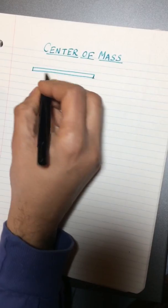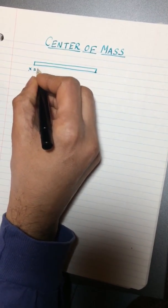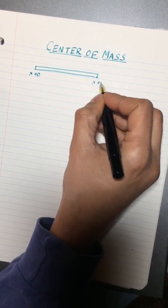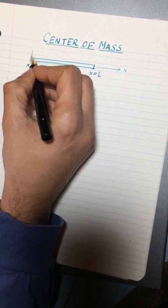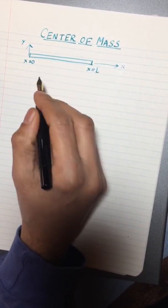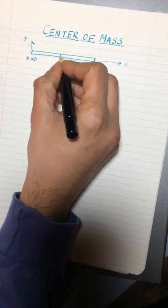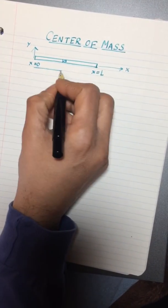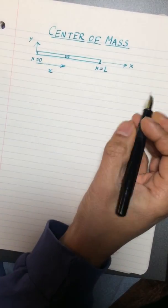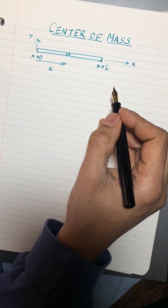So that's a rod, it's got length L so I'll put it along the x-axis. The left end of the rod is at x equals 0 and the right end of the rod is at x equals L, and any point of the rod can be thought of as being some distance x from the left end.